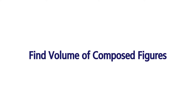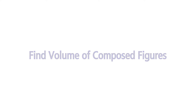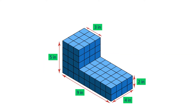Find volume of composed figures. This shape is a composite figure — it's made up of two rectangular prisms that are combined. But how can we find the volume of the figure? The first method is by breaking apart the solid figure into two rectangular prisms, and then using addition to find the total volume.